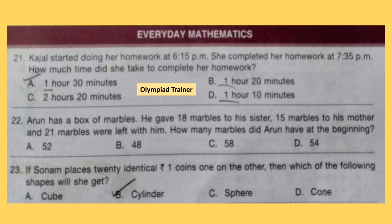Question 22. Arun has a box of marbles. He gave 18 marbles to his sister, 15 marbles to his mother, and 21 marbles were left with him. How many marbles did Arun have at the beginning? What you have to do here is addition. Adding all three numbers gives the number of marbles he had in the beginning. So the answer is option D: 54.